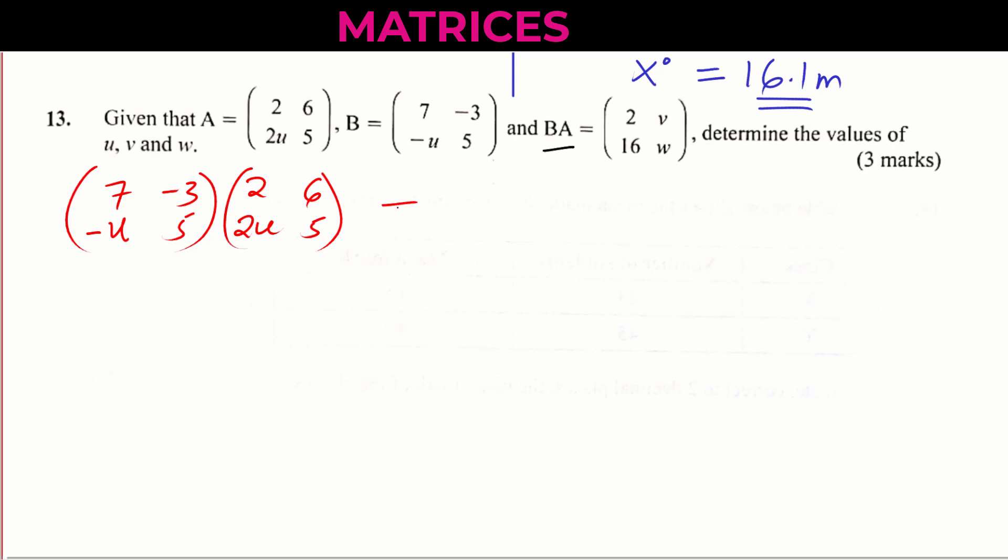So let us multiply these. These two matrices are compatible. So we begin row 1, column 1. And this one will give 7 times 2, then plus negative 3 times 2U. That is row 1, column 1, row 1 of matrix B and then column 1 of matrix A.